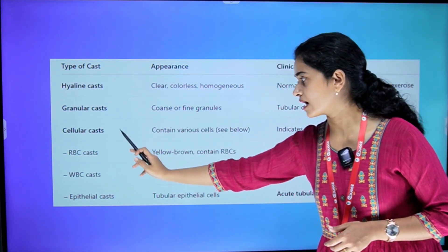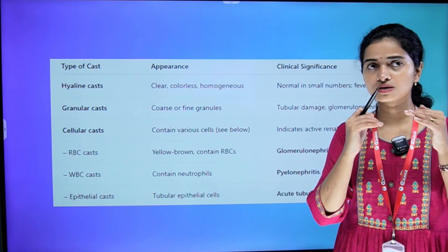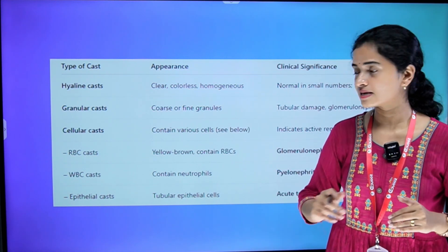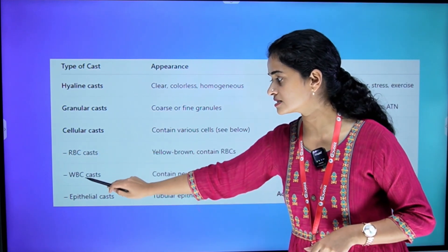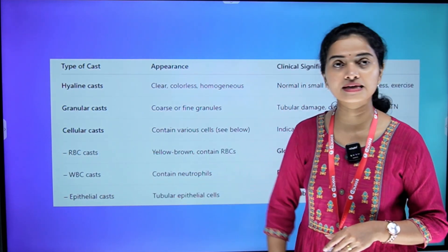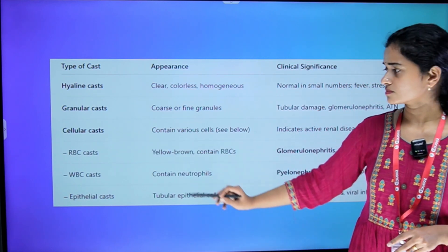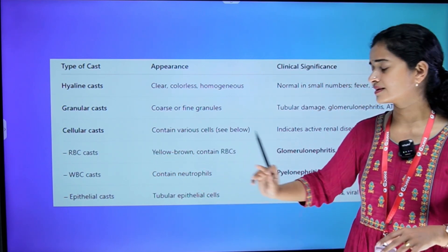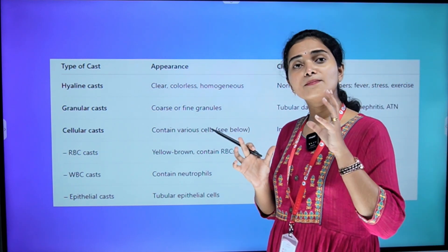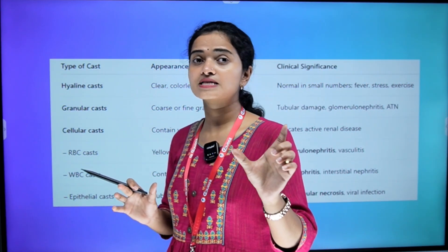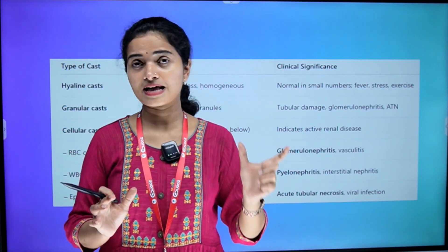Next one is cellular cast. There are various types: RBC cast, WBC cast, and epithelial cast. The RBC cast is yellow-brown and contains RBCs. The main clinical significance is glomerulonephritis and vasculitis.